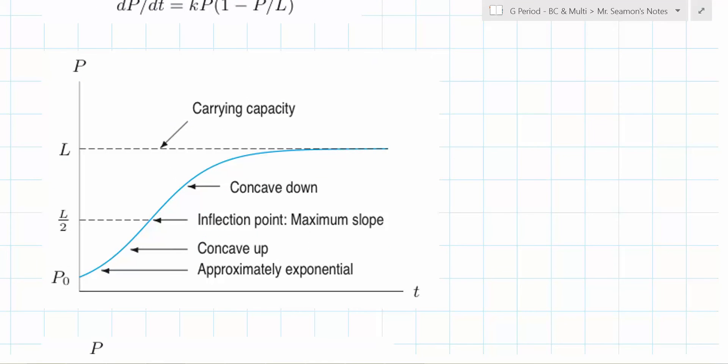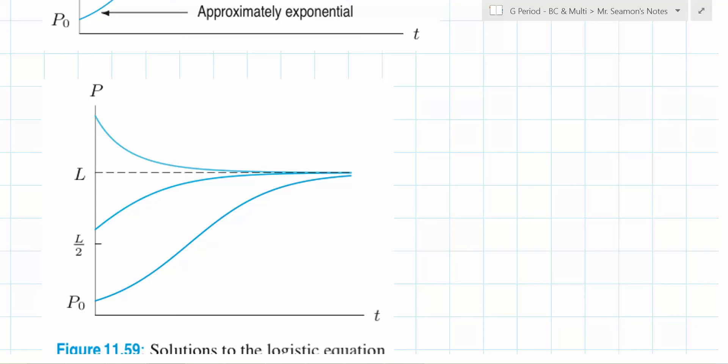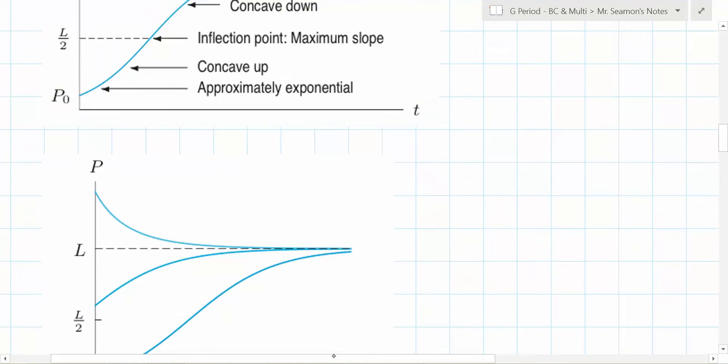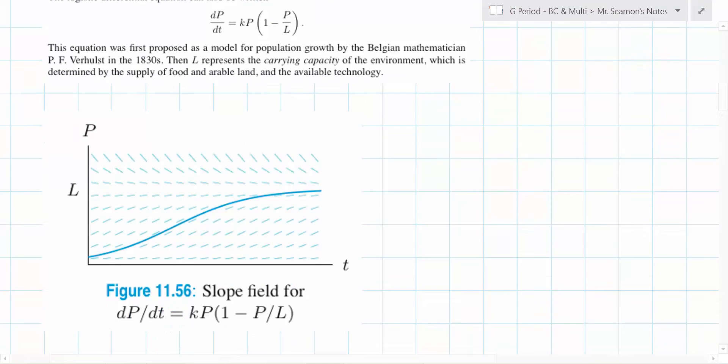We looked at one of the paths that L is the carrying capacity, and the general structure of the curve is it's concave up, then there's an inflection point, and it's concave down. The general path from below. But what about above? What is that going to do? It's going to be concave up the entire time. And what happens if you put a point that's above L over 2? It's all going to be concave down. That circle of two is the one that will look at the task L over 2.